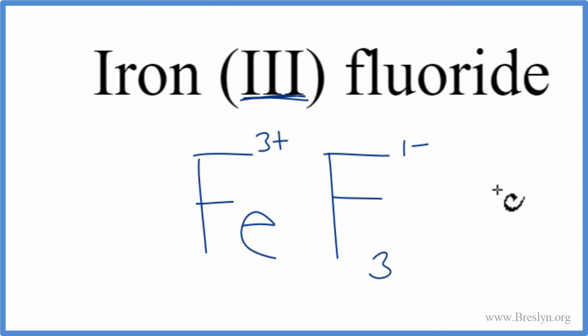So we have three of these fluorine atoms. 3 times the 1-minus. That's 3-minus. 1 times the 3-plus. 3-plus. So 3-plus and 3-minus, that adds up to zero. Our net charge is zero. This is the correct formula for iron-3-fluoride.